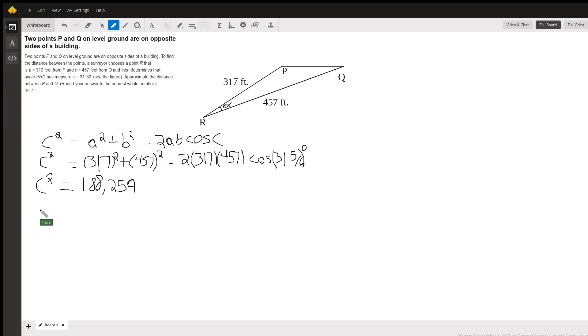So it looks a little bit weird, but that's good enough. So if we take the square root of this, we get that c, if we round it to the nearest whole number, is approximately 432 feet.